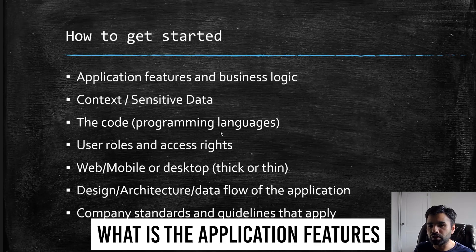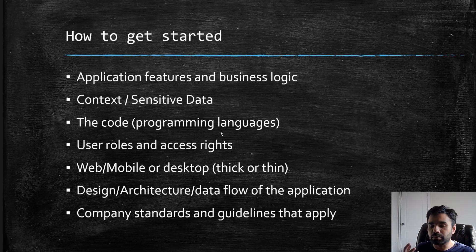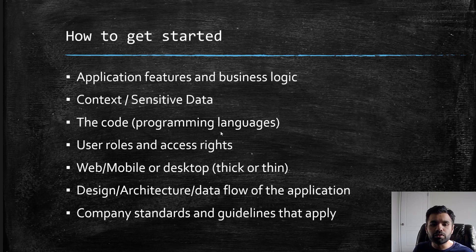To get started, first understand the application features and business logic — similar to what you'd do in threat modeling. Then understand the context and sensitivity of the data: what's classified, what's not, and which components handle which data. Next, understand the programming languages involved, because you may not be master of all languages the code is written in. There will be many libraries, front-end and back-end code, and different frameworks. Identifying all the languages also helps when running SAS scanners, since not all scanners are equally good across all languages.